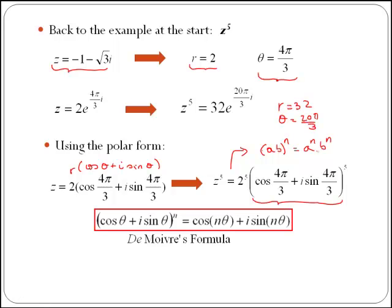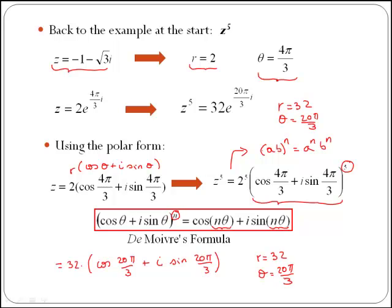Now applying De Moivre's formula — (cos θ plus i sin θ) to the n equals cos nθ plus i sin nθ, with n equal to 5 — we multiply the angle by 5. This gives 32 times (cos 20π/3 plus i sin 20π/3). So z to the 5 is a complex number with modulus 32 and angle 20π/3, which matches exactly the result we got using the exponential form.